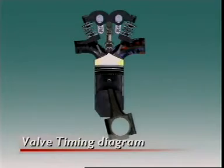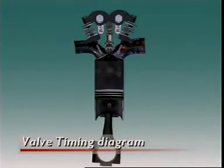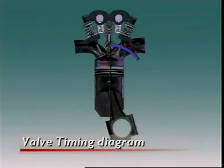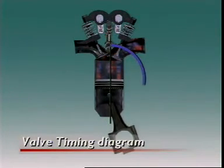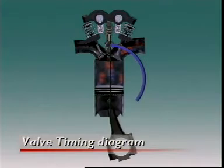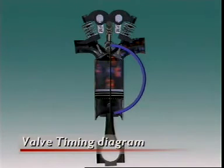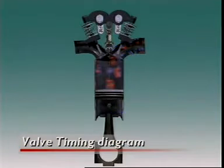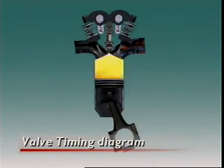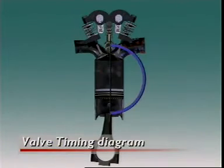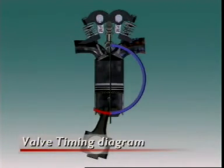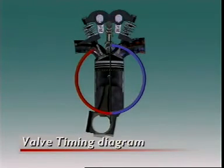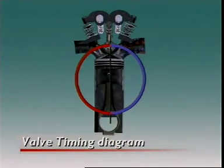To see how valve timing works in a four-stroke engine cycle, let's show piston motion as a circle. In this simple cycle, each stroke is shown as a semicircle. The intake valve opens at top dead center and closes at bottom dead center — the blue line shows that period and it matches the intake stroke. The exhaust valve opens at bottom dead center, then closes at top dead center, before the new air-fuel mixture enters the cylinder.